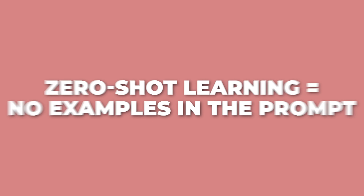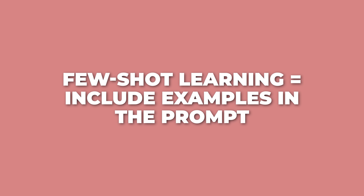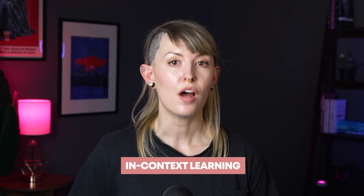Sometimes you don't need to give examples in your prompt — you just ask the model to do something and it figures it out. That's called zero-shot learning, like asking 'translate this to Spanish' without showing any examples first. But often, showing a few examples works way better. That's few-shot learning: you include a handful of examples in your prompt to show the exact style you want, and the model copies your pattern. This is all part of something called in-context learning — you're not permanently changing the model, you're just teaching it temporarily within one conversation by including examples right in your message.